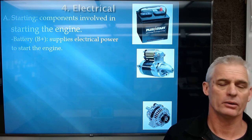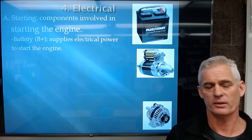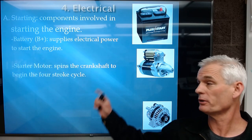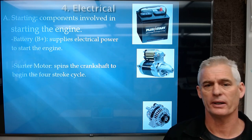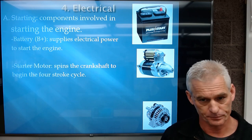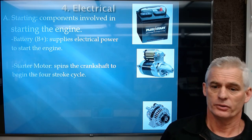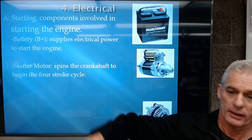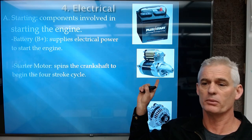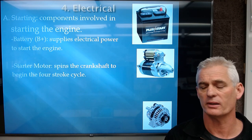The battery's main job is starting the engine, about 90% of its role. It can also help supply power if we exceed the alternator's output. Next is the starter motor, which spins the crankshaft and begins what we call the four-stroke cycle. In the old days, they had a hand crank to turn the crankshaft to start the engine. Now we turn a key or push a button and this electric motor uses battery power to spin the crankshaft, initiating the burning of air and fuel in the four-stroke cycle.